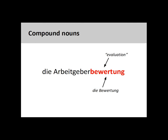Let's add yet another noun to our chain. The third noun is die Bewertung, a feminine noun meaning evaluation. You will recall from the presentation on feminine nouns that all nouns ending in -ung are feminine. Since this is the last noun in the chain, the gender for the compound noun is feminine.